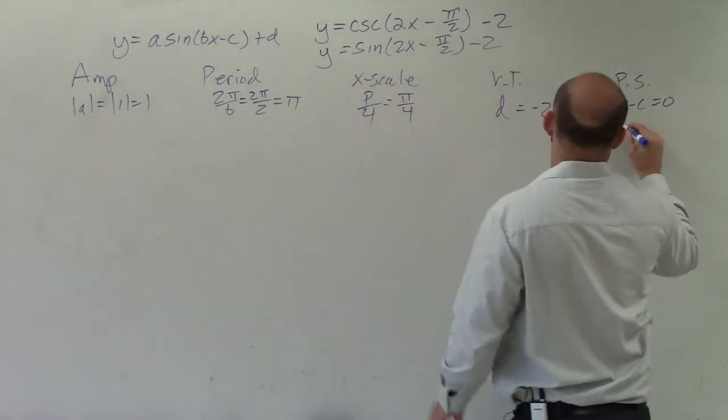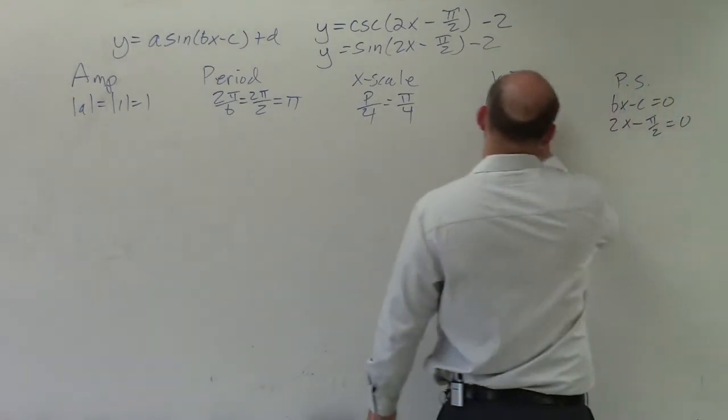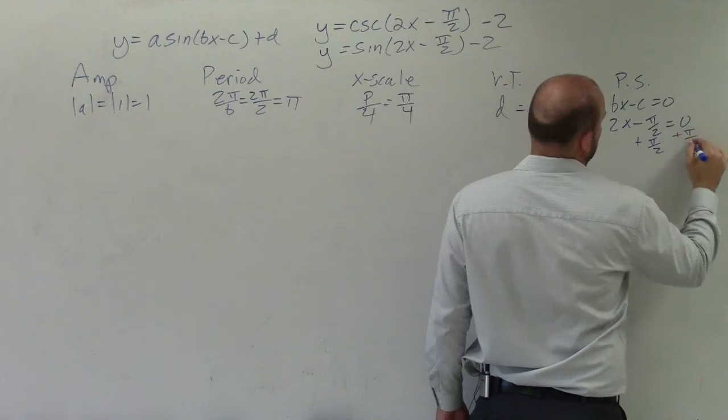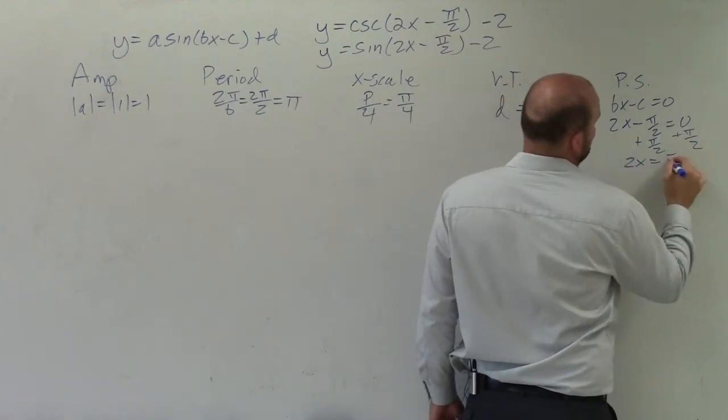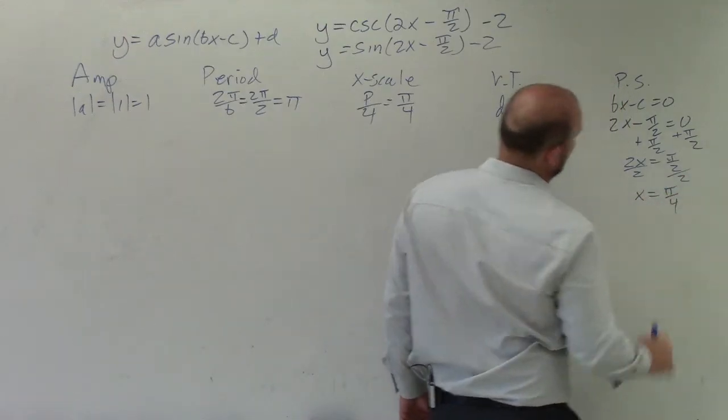My phase shift is going to be 2x minus pi halves equal to 0. Solving for x, I'll add pi halves, and I get 2x equals pi halves, divide by 2, x equals pi over 4.